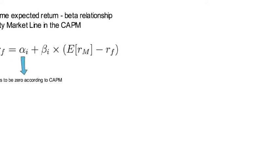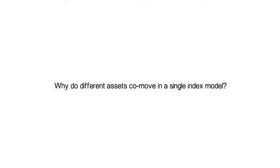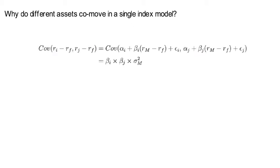Let's have a closer look at why different assets co-move in the single index model through some simple equation-based manipulations. Let's work out what a covariance of excess return i with excess return j looks like. It's the covariance of, now you plug in the single index model for asset i and for asset j. That gives you the first equality sign.